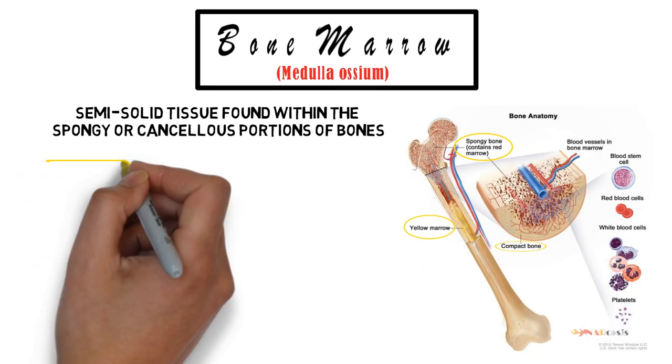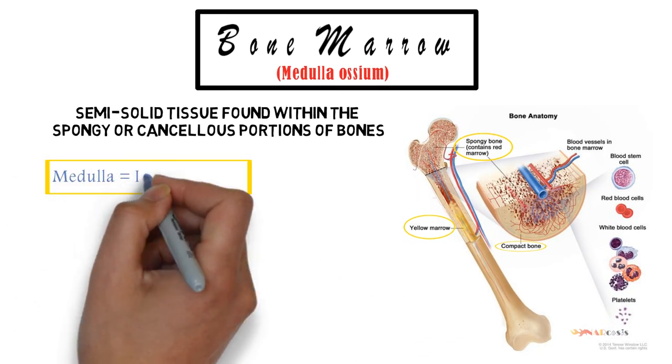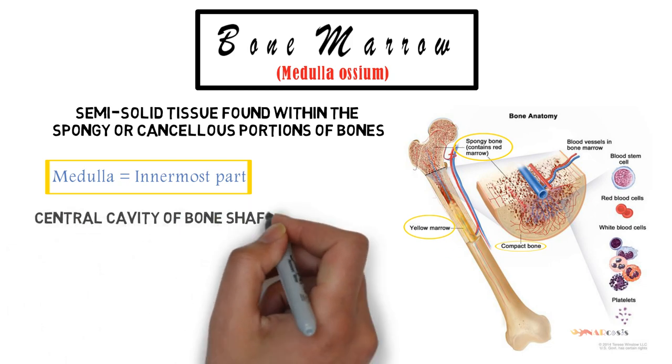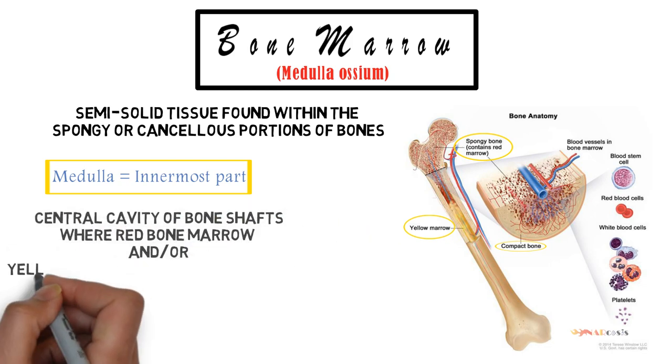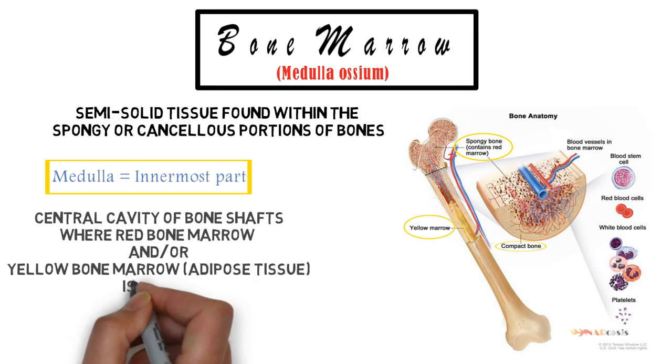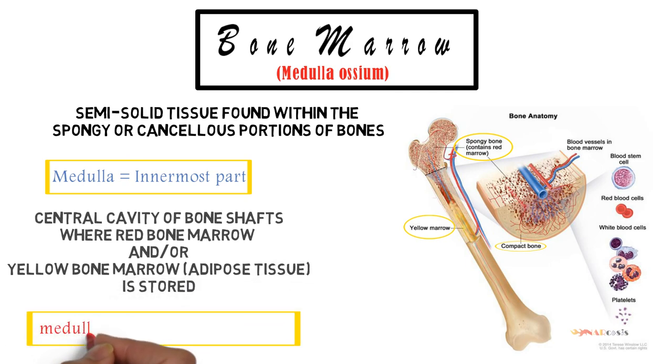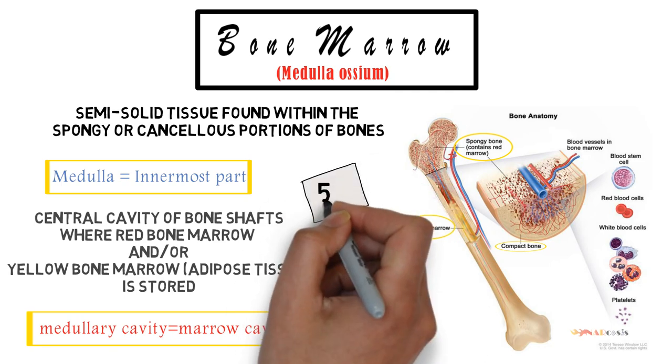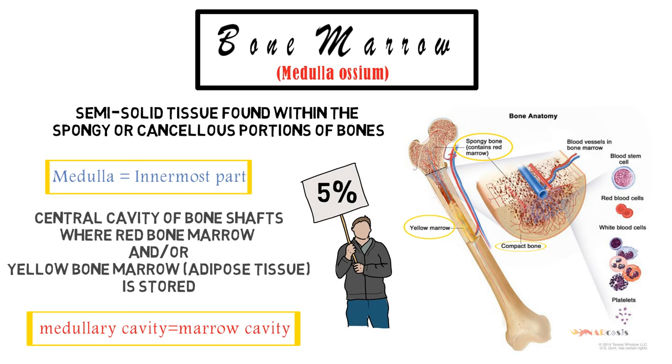The medulla is the innermost part of the bone or anything, and the central cavity of bone shafts where red bone marrow and/or yellow bone marrow is stored is called the medullary cavity or the marrow cavity.